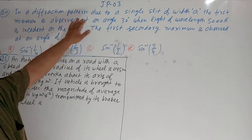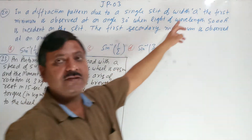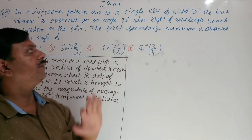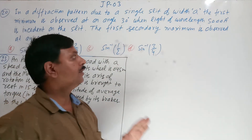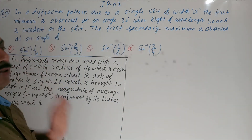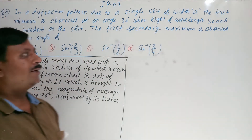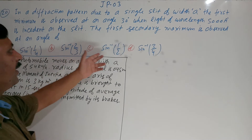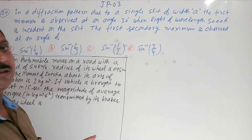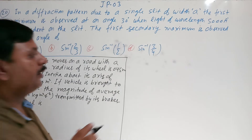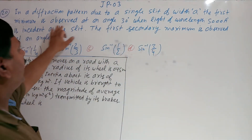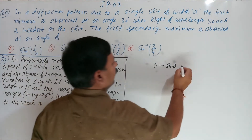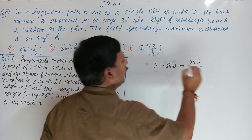Next problem: in a diffraction pattern due to a single slit of width A, the first minimum is observed at an angle of 30 degrees with light of wavelength 5000 Angstroms incident on the slit. Find the angle at which the first secondary maxima is observed. The angular position formula is sin(theta) equals n·lambda / A.